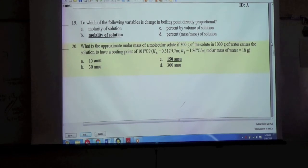What is the approximate molar mass of a molecular solute if 300 grams of solute and 1,000 grams of water causes the solution to have a boiling point of 101 degrees Celsius? C, 158 amu.